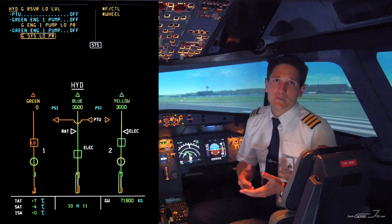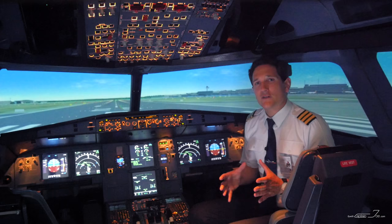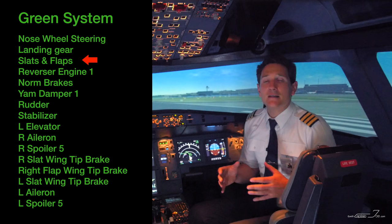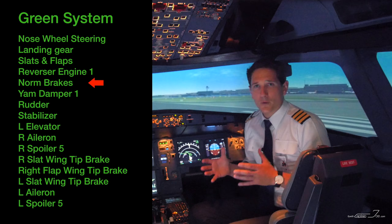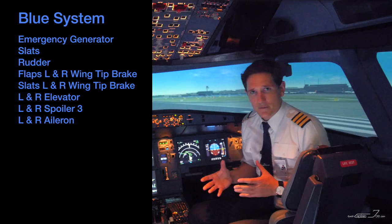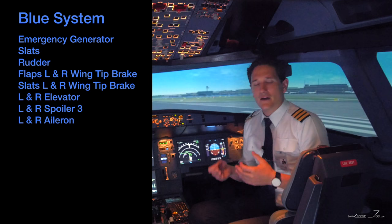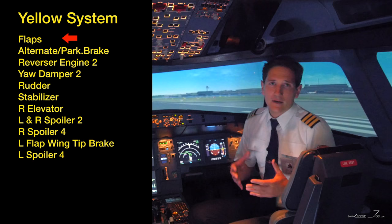Now let's look at some important components for which each hydraulic system is responsible. The green hydraulic system takes care of the landing gear retraction, moves the slats and the flaps, opens the reverser doors of engine 1, and provides pressure for the normal braking system, and much more. The blue system drives the slats and most of the flight controls, and besides that, in case of a total electrical power loss, the ram air turbine deploys, pressurizing the hydraulic system and driving an emergency generator for electricity. The yellow system drives the flaps, provides pressure for the alternate braking system and reverser doors of engine 2.